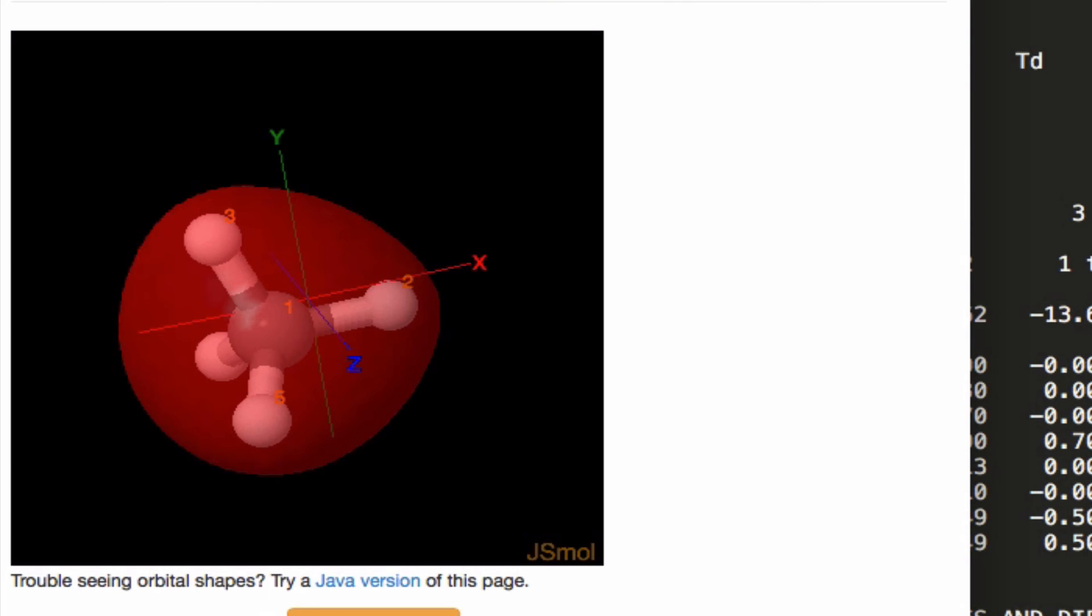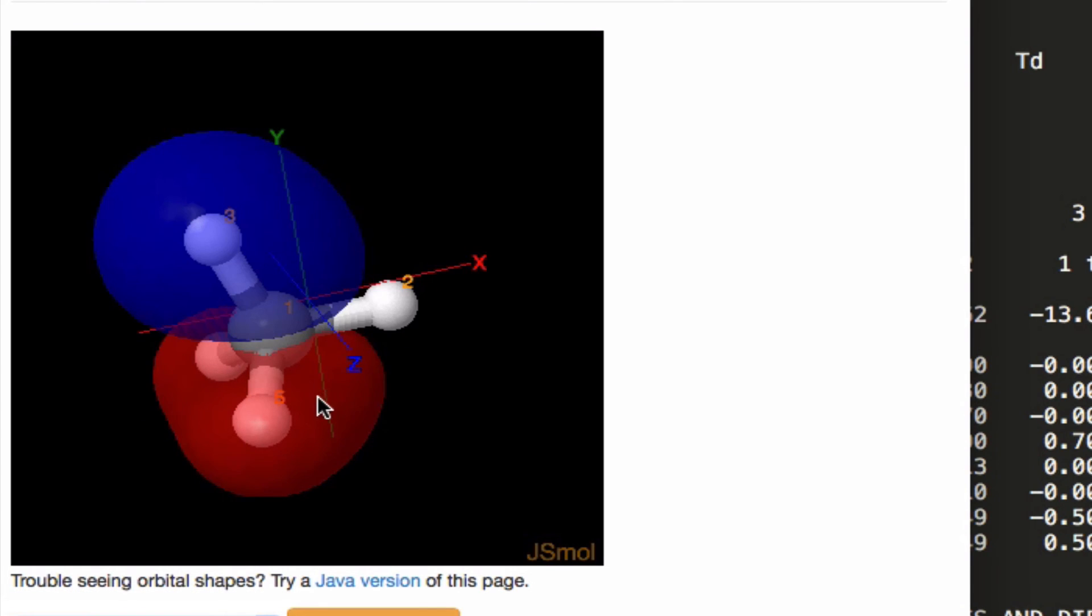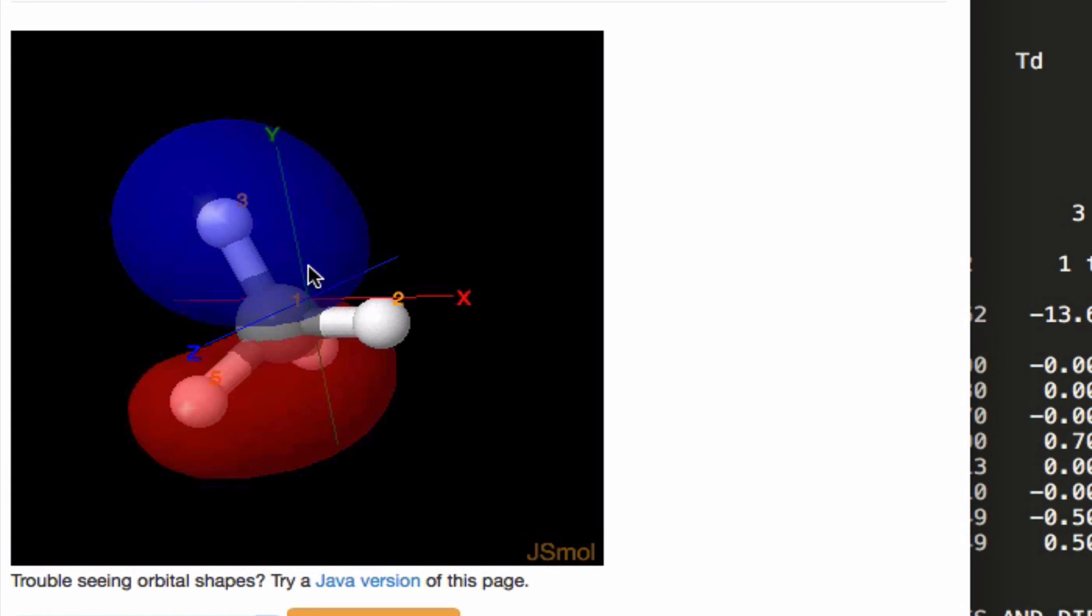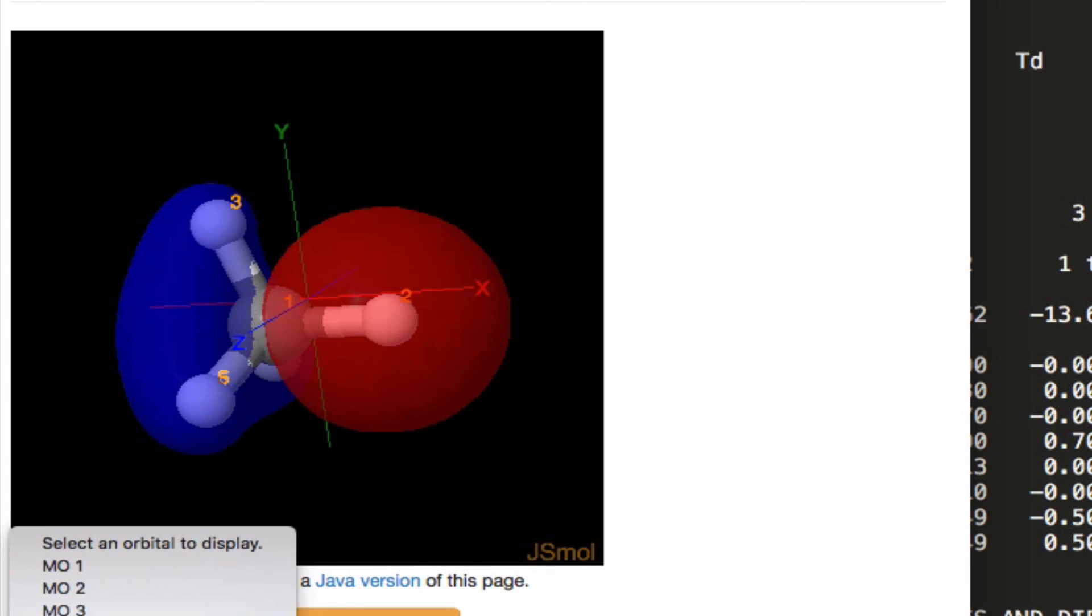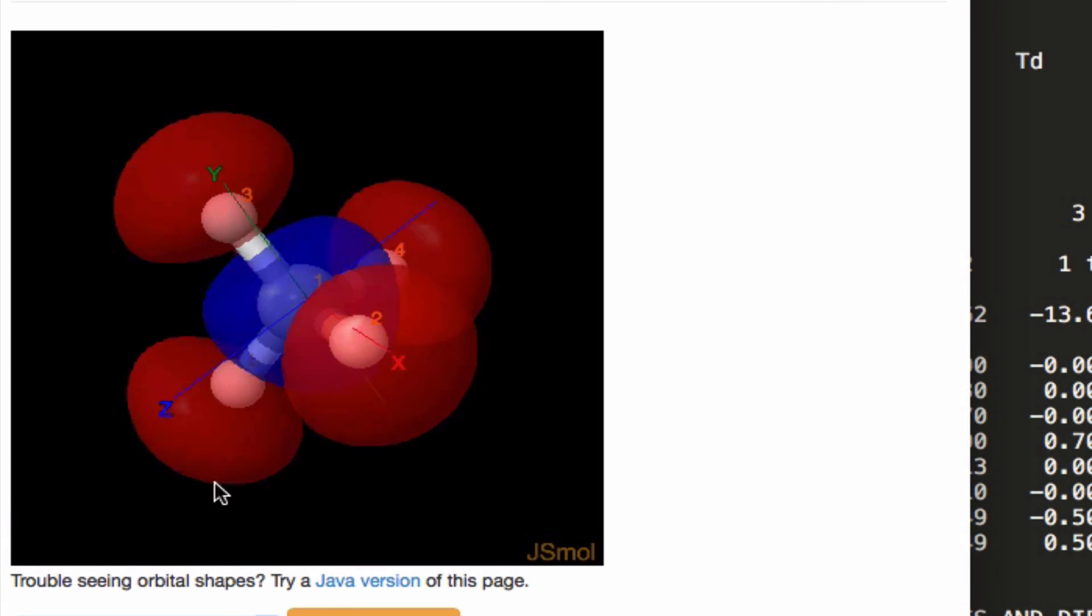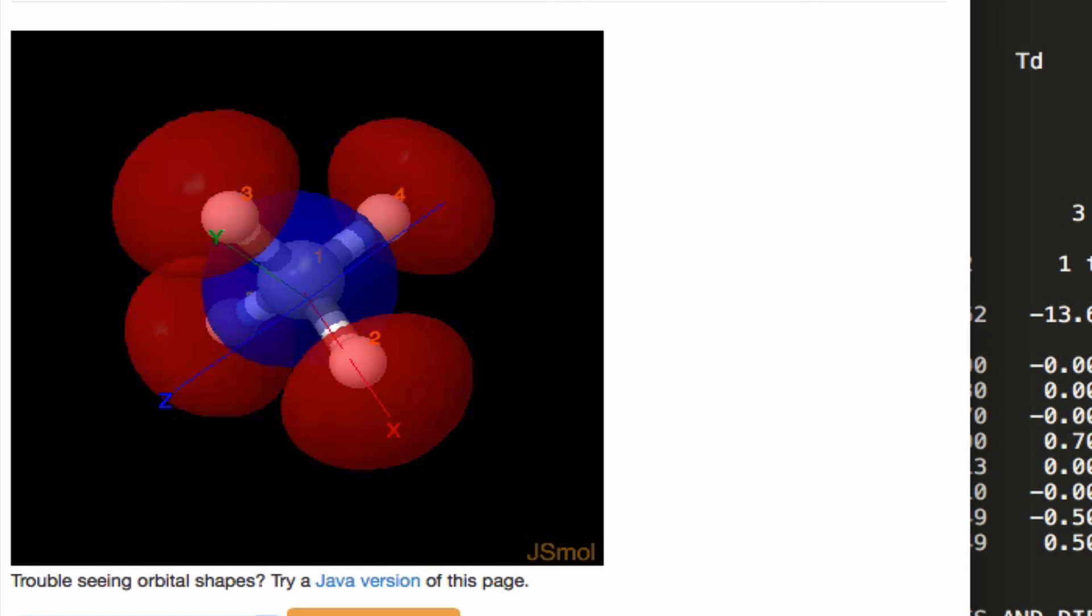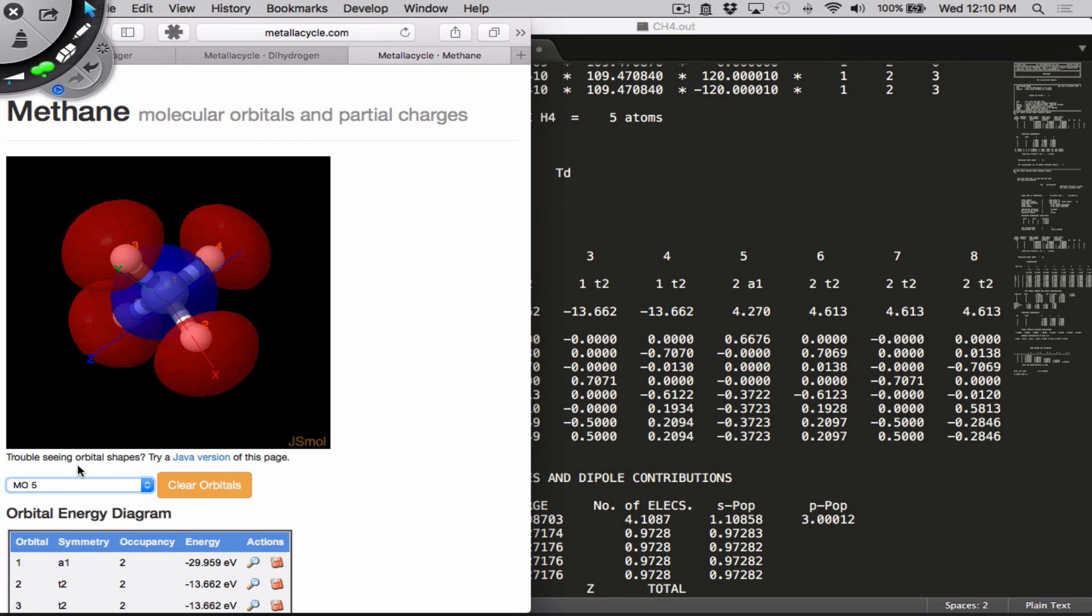I'll just scroll through a few more of these MOs. Here we can see that this clearly has some contribution from the carbon 2p orbital since this looks like a p orbital. If I imagine the blue density up here and the red density down here as the opposite phase, this looks like a p orbital centered on the carbon atom and we should expect that to be a large contributor to this MO. We'll see more examples of molecular orbital theory in a metals and materials context in class.